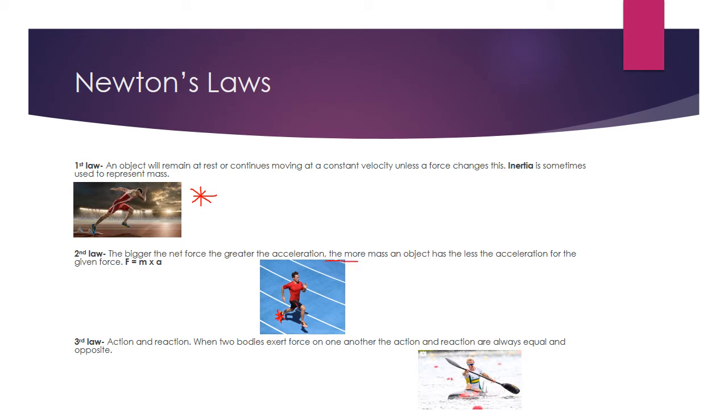Also something to note is the more mass an object has, the less acceleration there is going to be. So if this sprinter was, say, 20 kilos heavier, his acceleration would be much less. That is why you usually see sprinters with very low body fat, because if they were to carry more body fat and unusable muscle, they wouldn't be moving as fast as someone else.